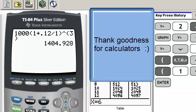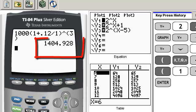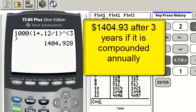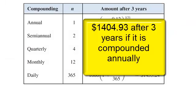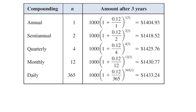And it looks like after three years, if I compound it annually, I will have, instead of just 1,000, I now have 1,404 dollars and 93 cents.